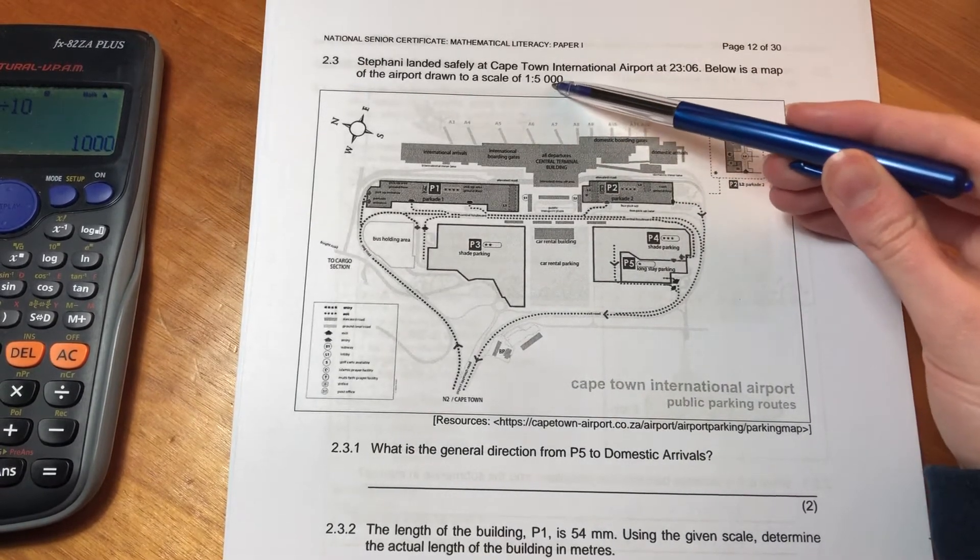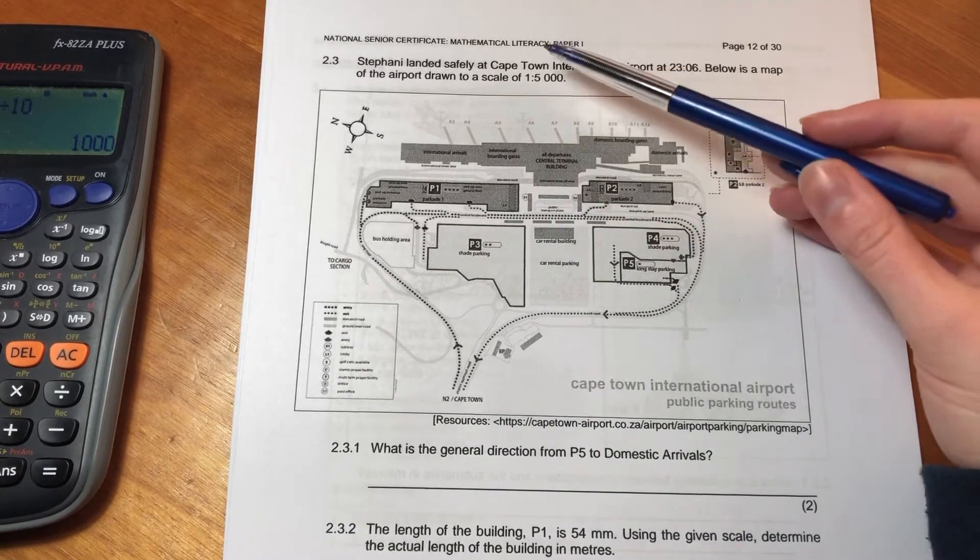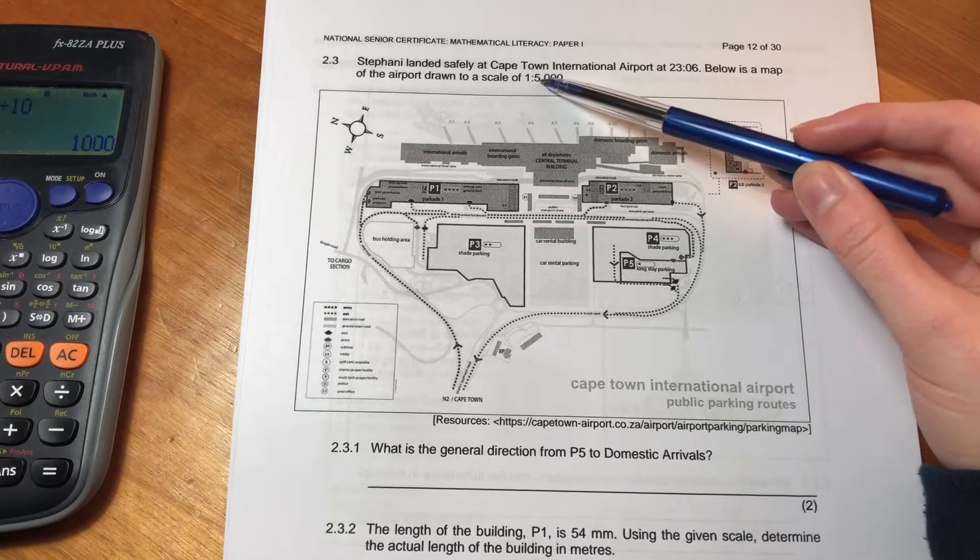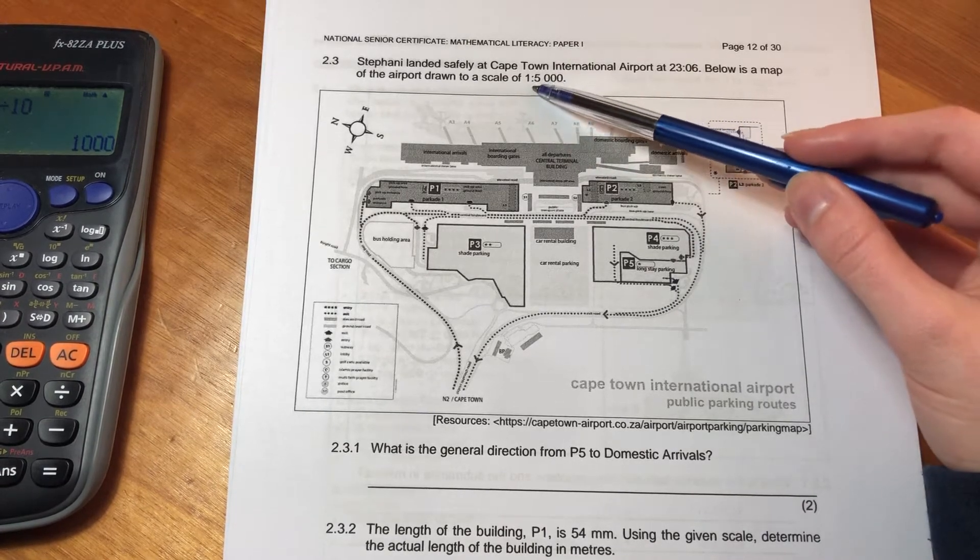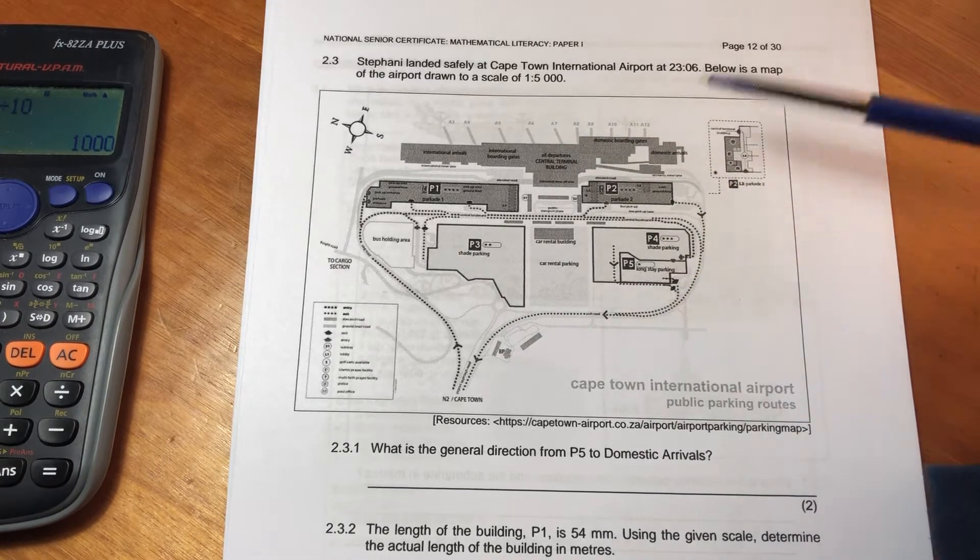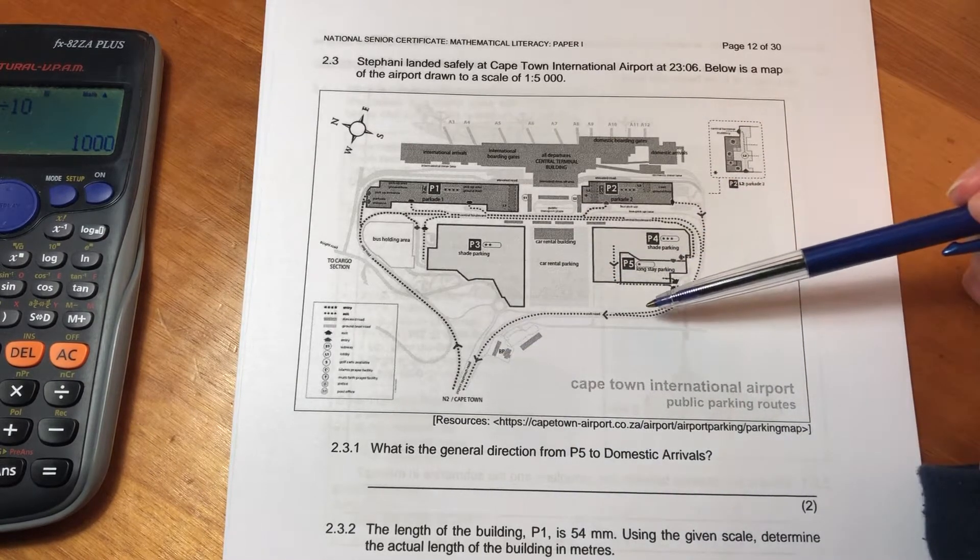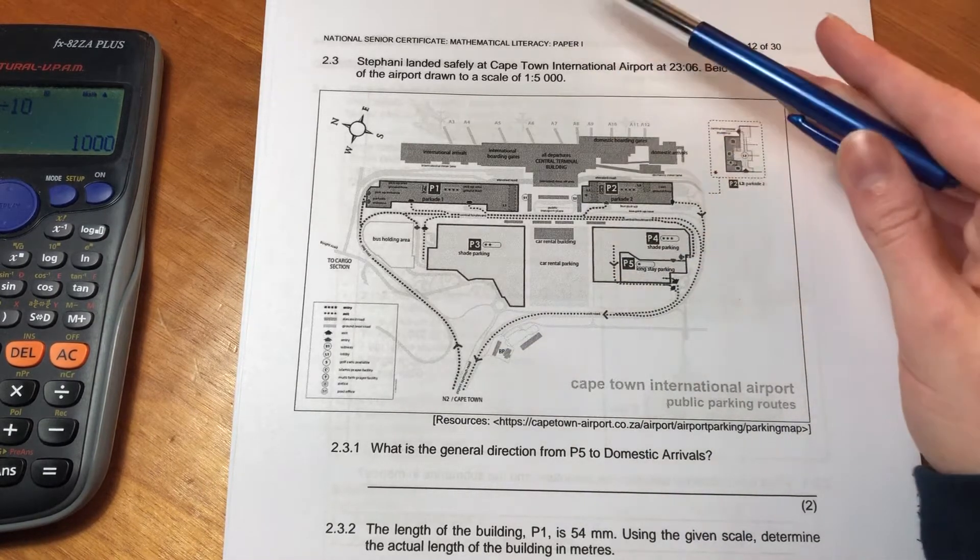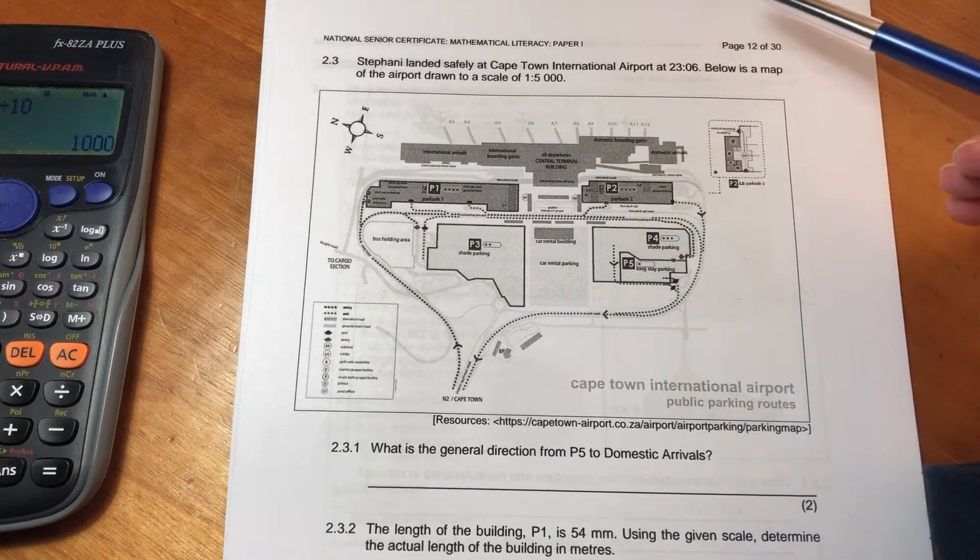Remember, that means that every one unit on here, we don't know exactly what that unit is at this point in time, they'll probably give us more detail on that. It equals 5000 units in reality. Remember that a map is always a smaller representation of reality because it helps us navigate. There'd be no help at all if it was the same size as reality, because then we wouldn't be able to navigate.